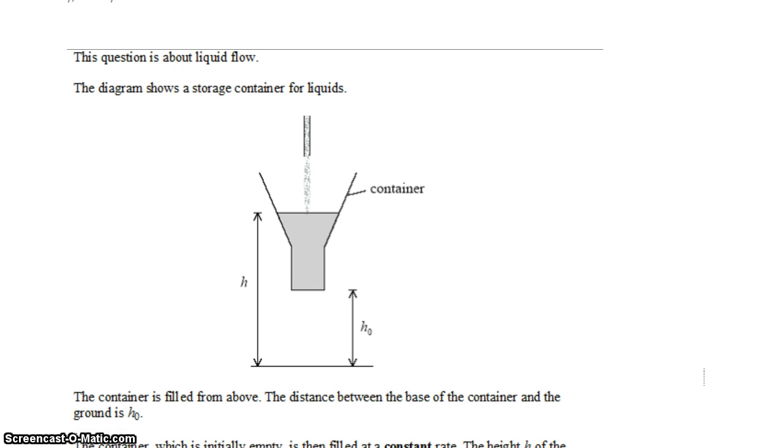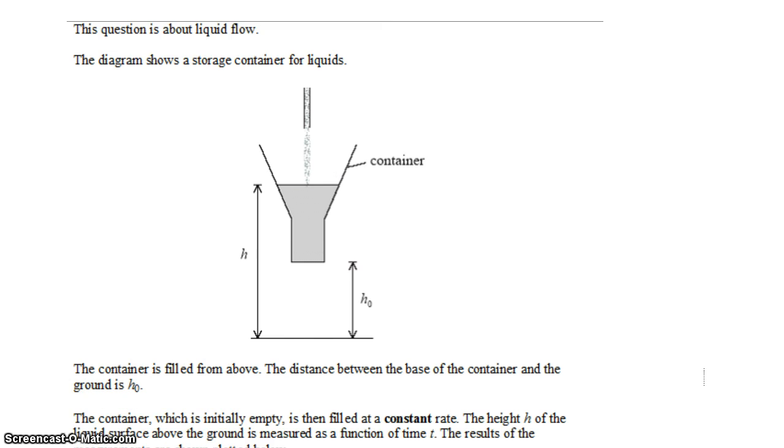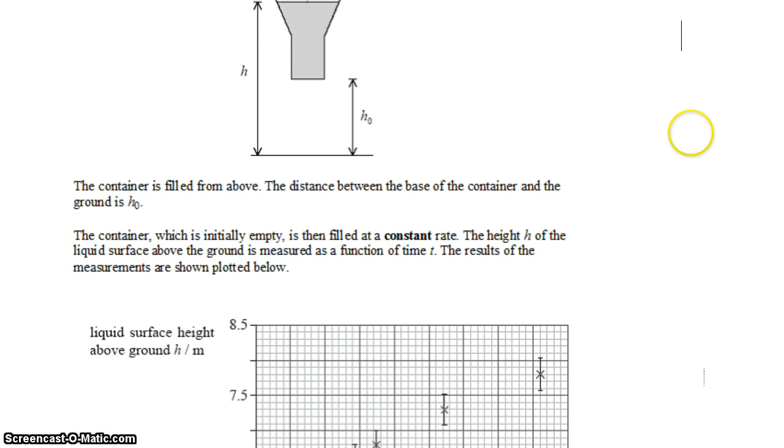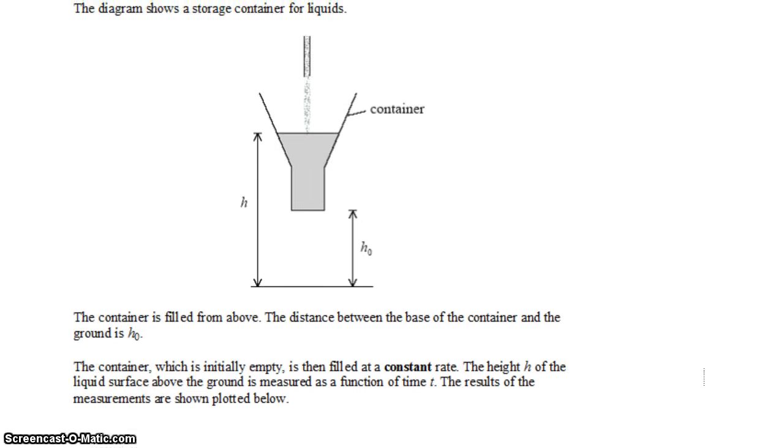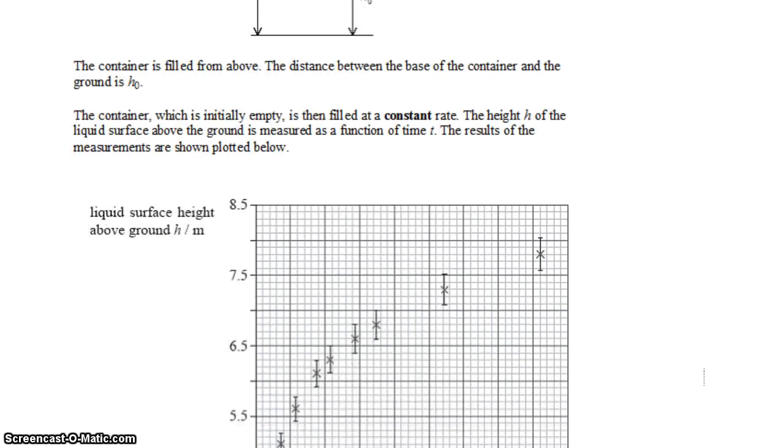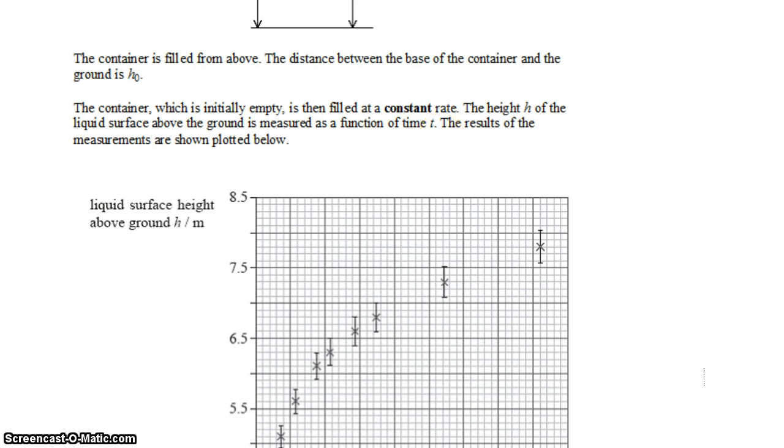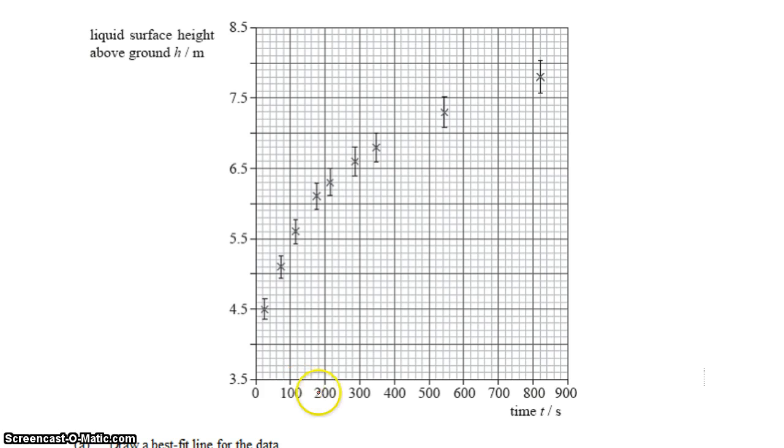We have a data analysis question where we're filling a container with liquid. So liquid pours in, fills up the container. The container is filled from the base, it's initially empty, and it's filled at a constant rate. The height of the liquid surface above the ground, that would be that value there, is measured over time, and the results are shown here. So as time goes on, we see the height of the liquid increasing as the container fills.